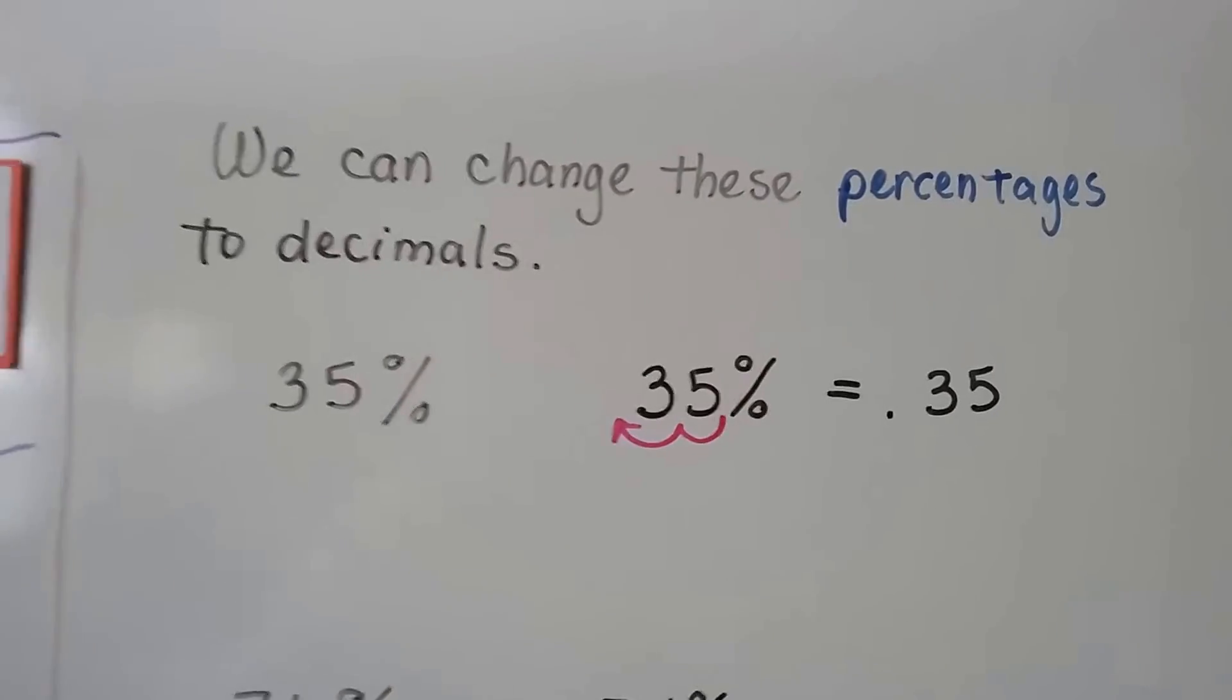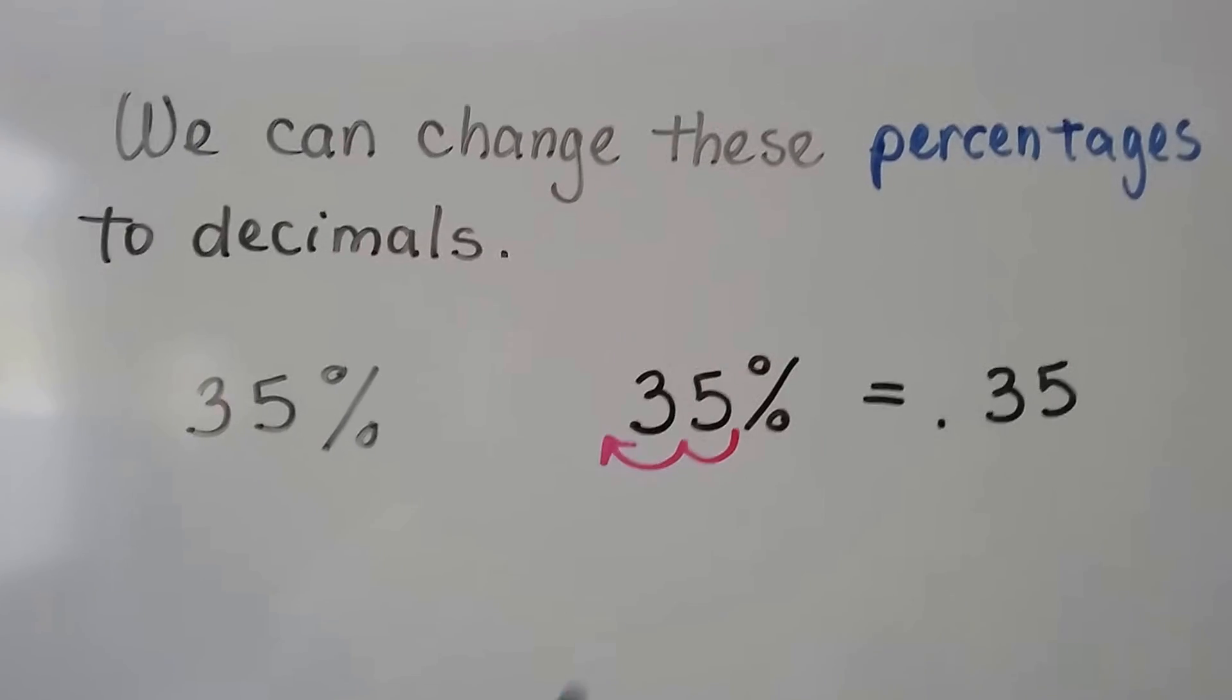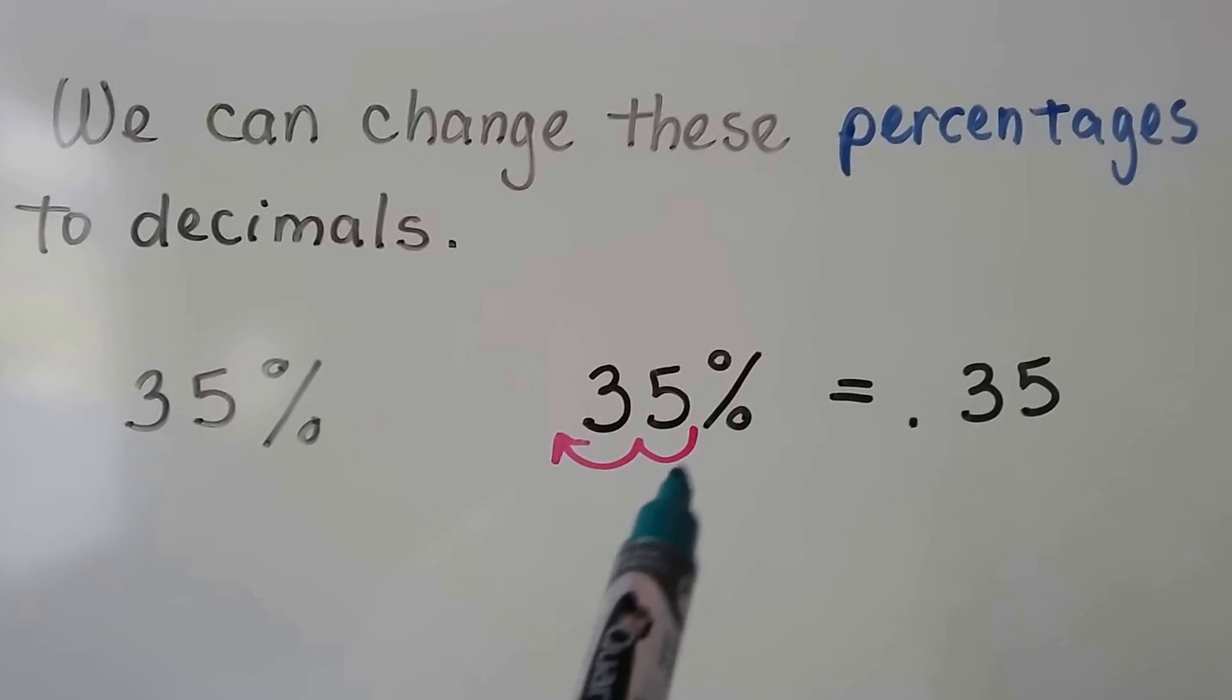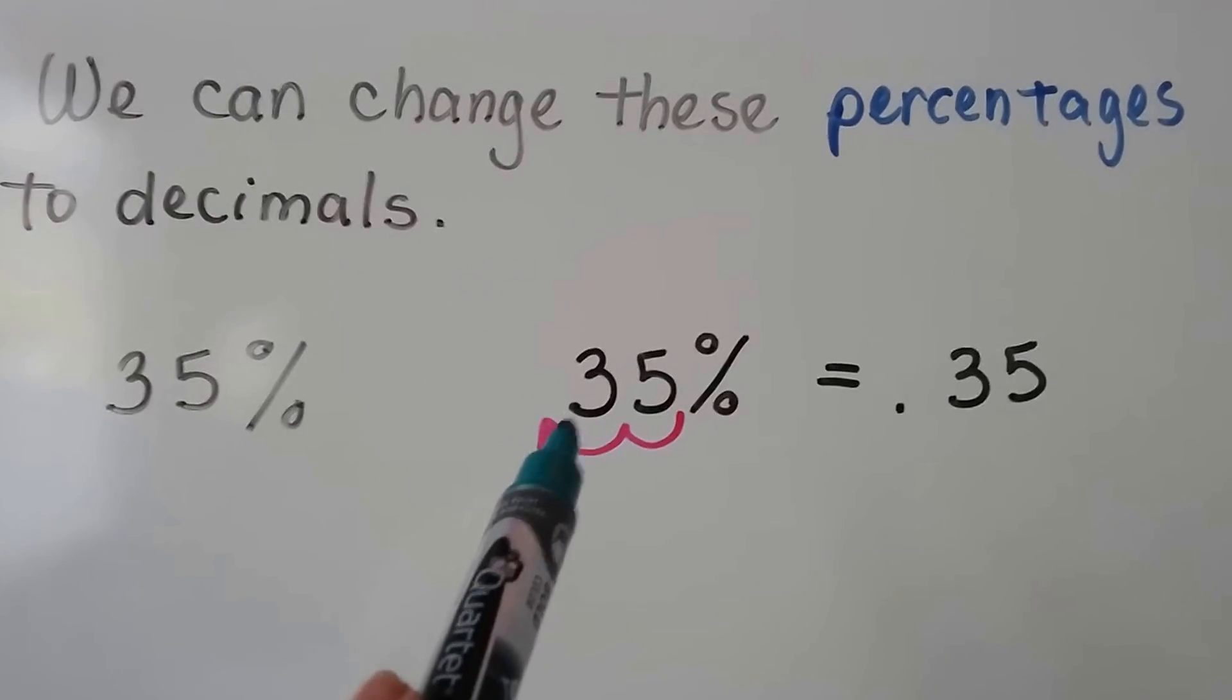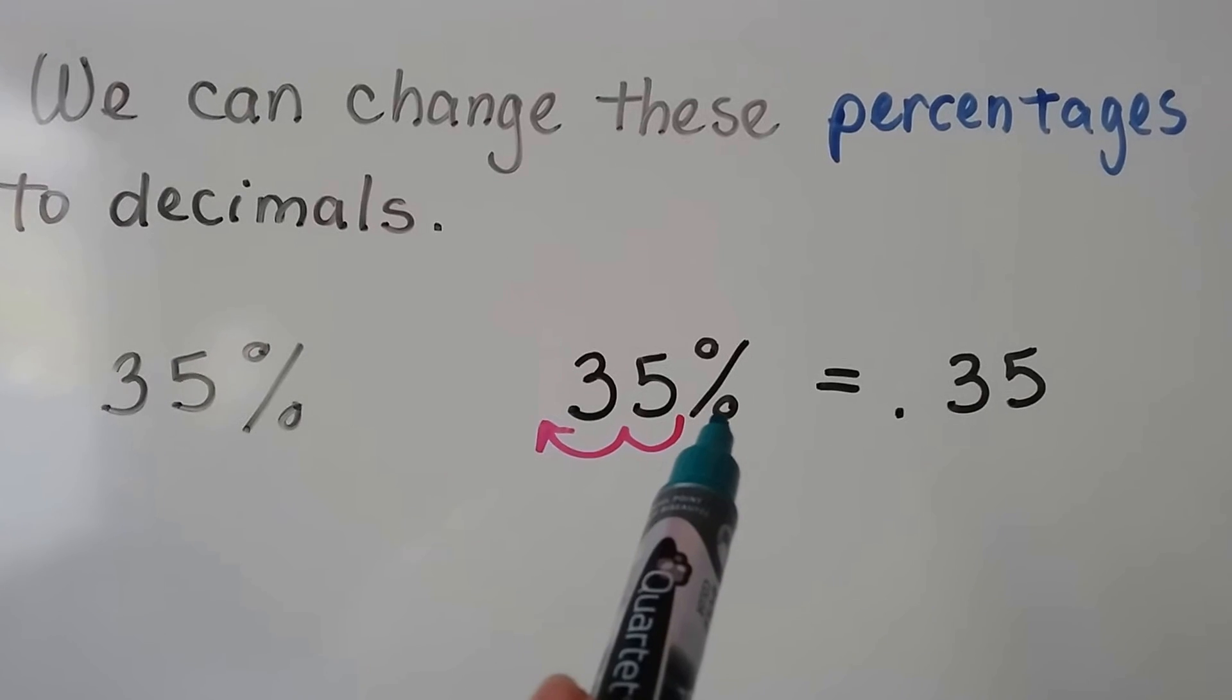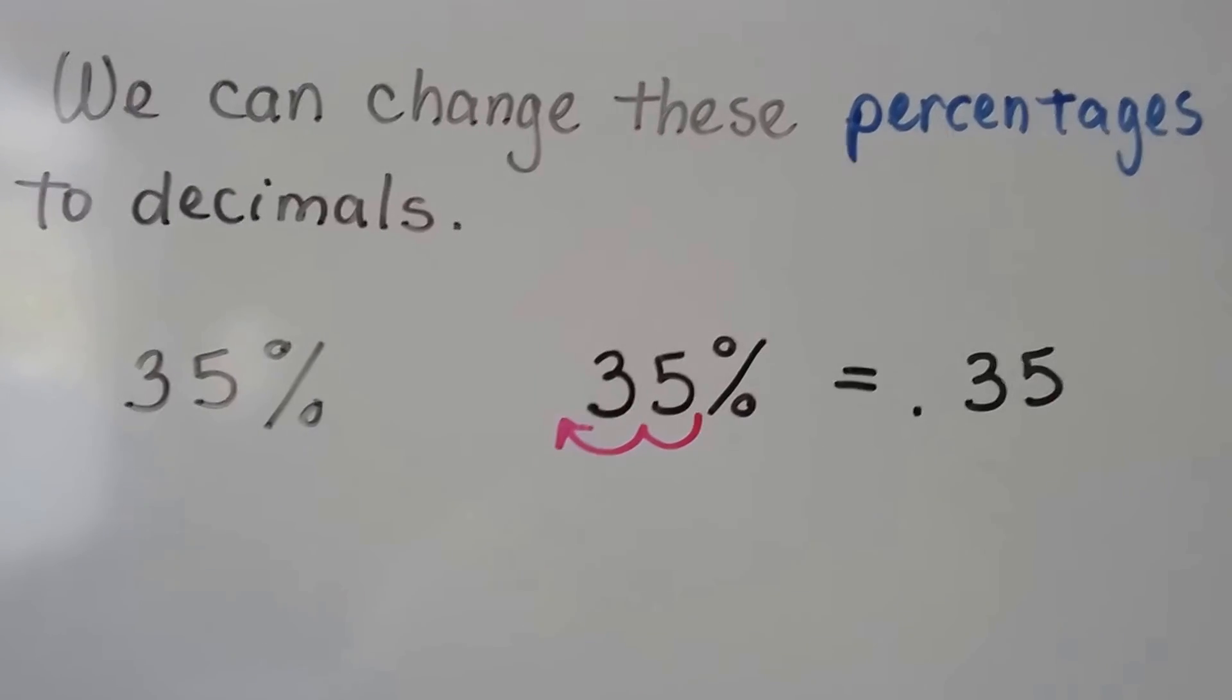So let's try a bunch of these. We can change these percentages to decimals. We have 35%. We start from the percentage sign and go one, two hops. We're going to put a decimal point in front of the three and then get rid of the percentage sign, and we have 0.35.